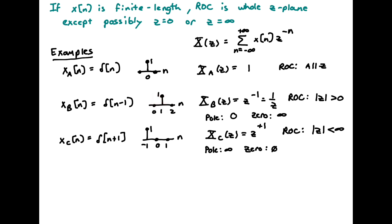Now let's shift that signal by one point: delta of n minus 1. We again have only one term in the sum, but now it's Z inverse, which we can write as 1 over Z, making it easier to see the pole and zero. The region of convergence is absolute value of Z greater than 0, because there's a pole at Z equals zero. There's also a zero at infinity — there are always an equal number of poles and zeros, so we have a finite pole at zero and the zero is at infinity.